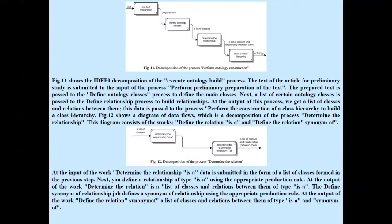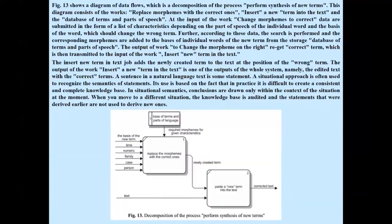This data is passed to the process perform the construction of a class hierarchy to build a class hierarchy. Figure 12 shows a diagram of data flows which is the decomposition of the process that determines the relationship. Figure 13 shows a diagram of data flows which is the decomposition of the process perform synthesis of new terms. The insert new term in text job adds the newly created term to the text at the position of the wrong term. The output of the system is the edited text with correct terms.